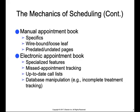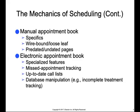There are two different types of appointment books. The first is a manual appointment book — the traditional physical book with specifics about the appointment, usually wire-bound or loose-leaf, and available predated or undated. An electronic appointment book includes specialized features such as missed appointment tracking, up-to-date call lists, and the ability to manipulate the database in certain ways, such as incomplete treatment tracking. For example, you can search for all patients that have incomplete treatment in order to call them and get them scheduled.